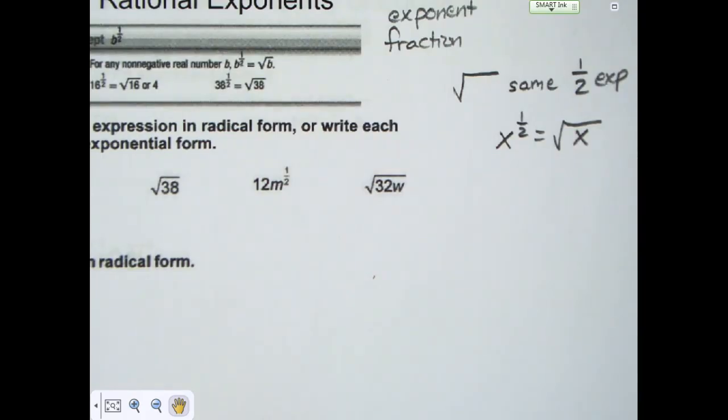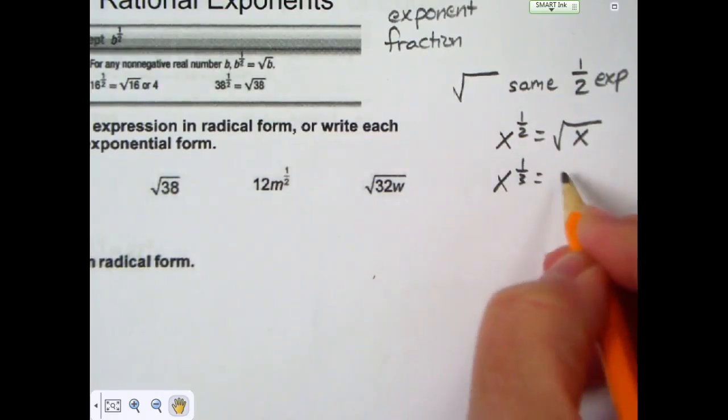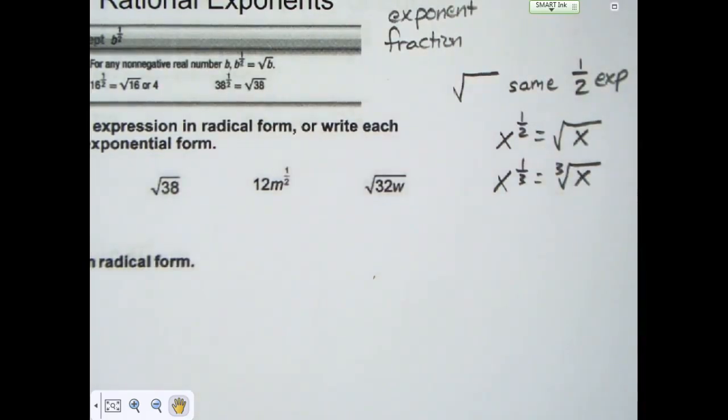Any number that's in the denominator of an exponential fraction is what kind of root we're looking for. So x to the one third power equals the cube root of x.